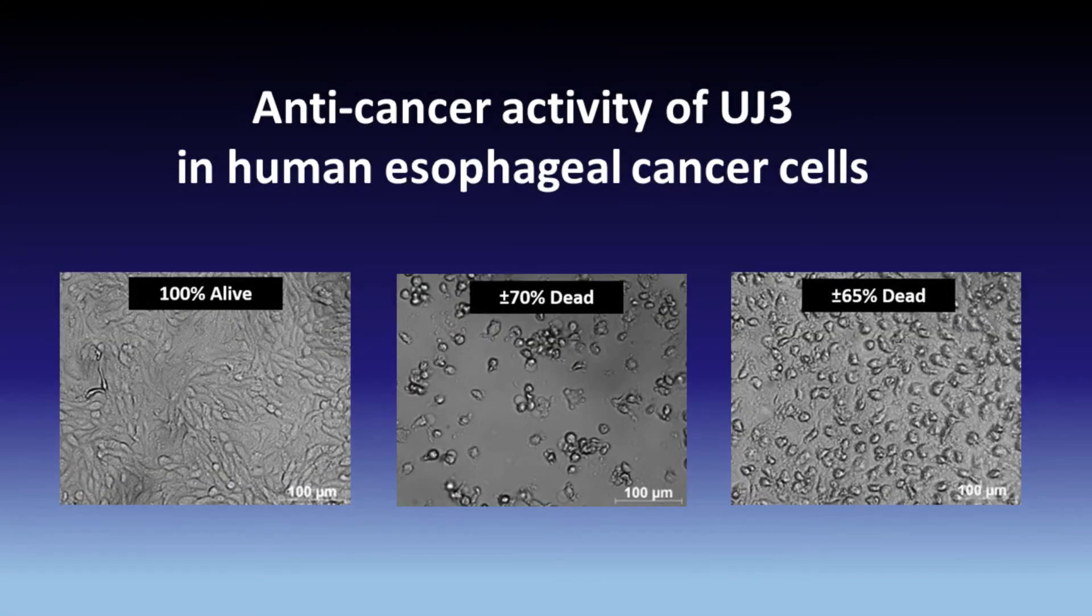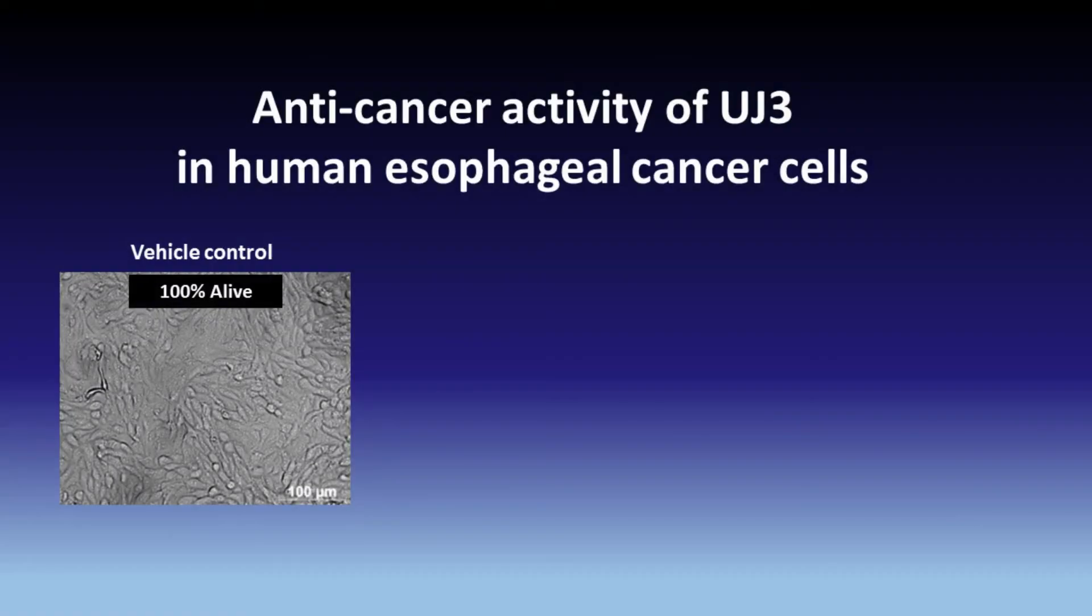Here we see the structural changes that happen when human esophageal cancer cells were treated with the UJ3 compound, or with the established chemotherapeutic drug called cisplatin. On the left, we see the live cancer cells in the vehicle control, which is a non-toxic solvent used to dissolve the drug in.